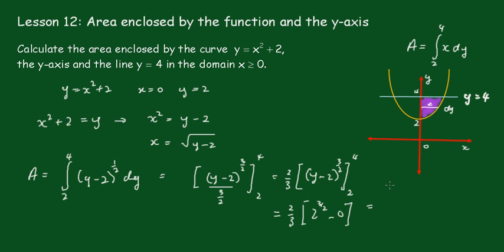And that will give me 2 thirds times, and this is 2 root 2 units, which becomes 4 root 2 on 3 units squared. And leave it in the exact form unless you're asked to change to a decimal.